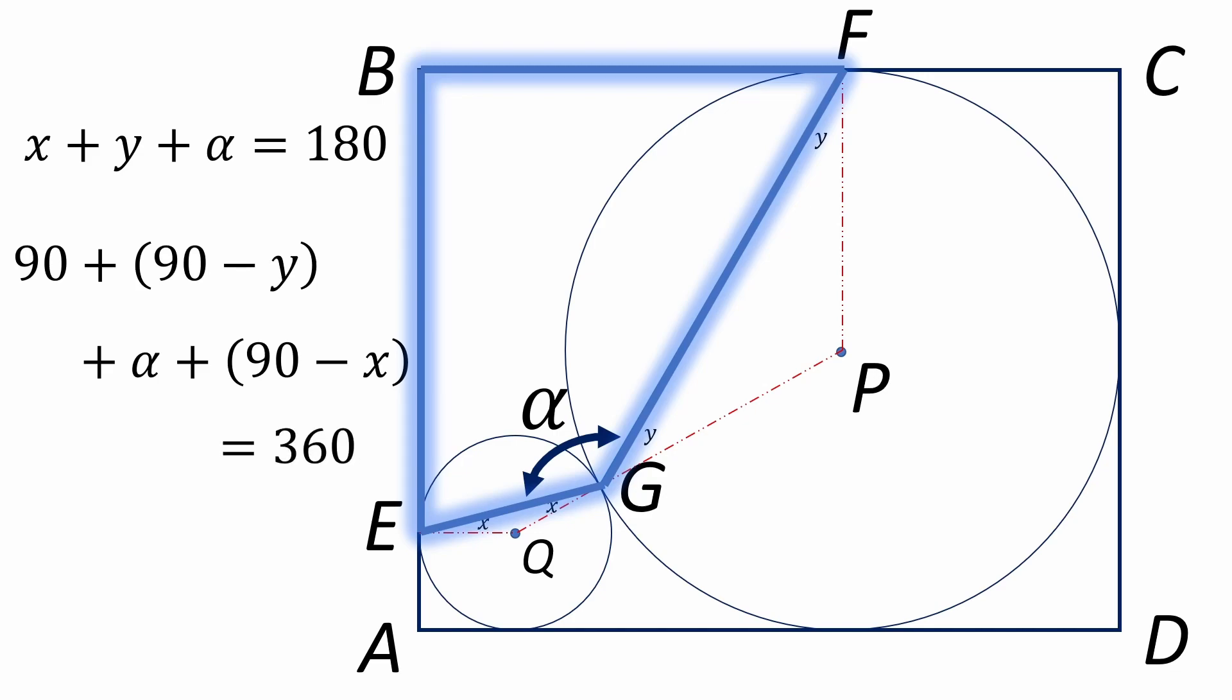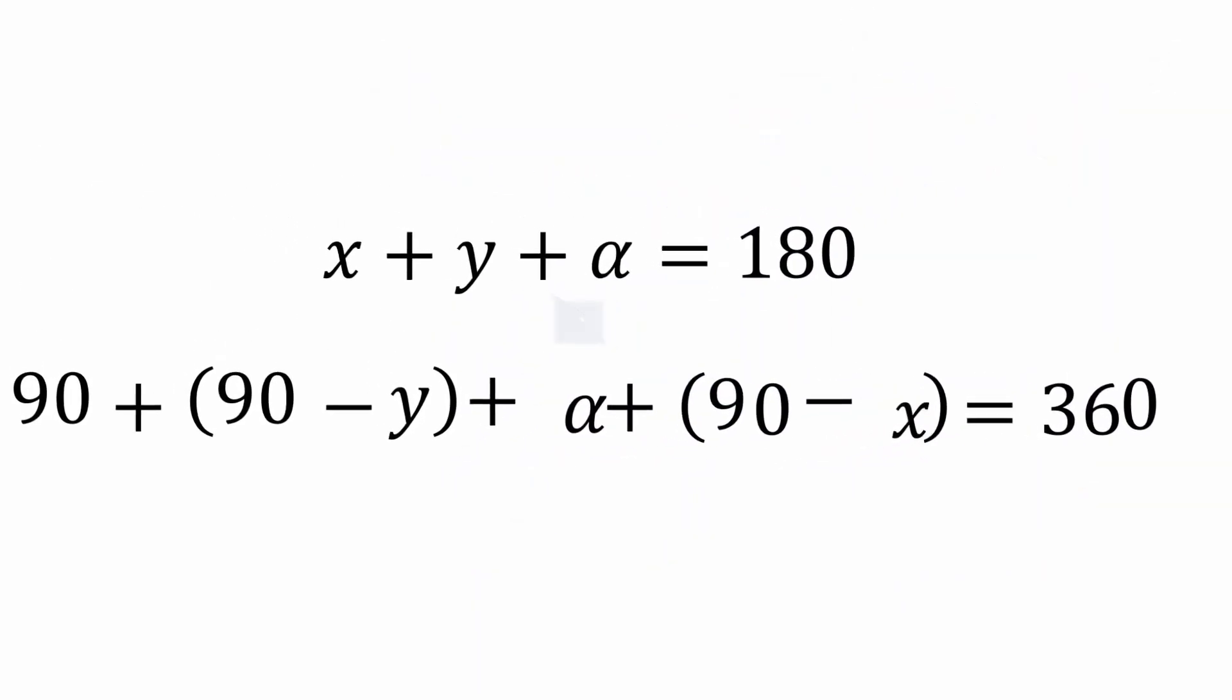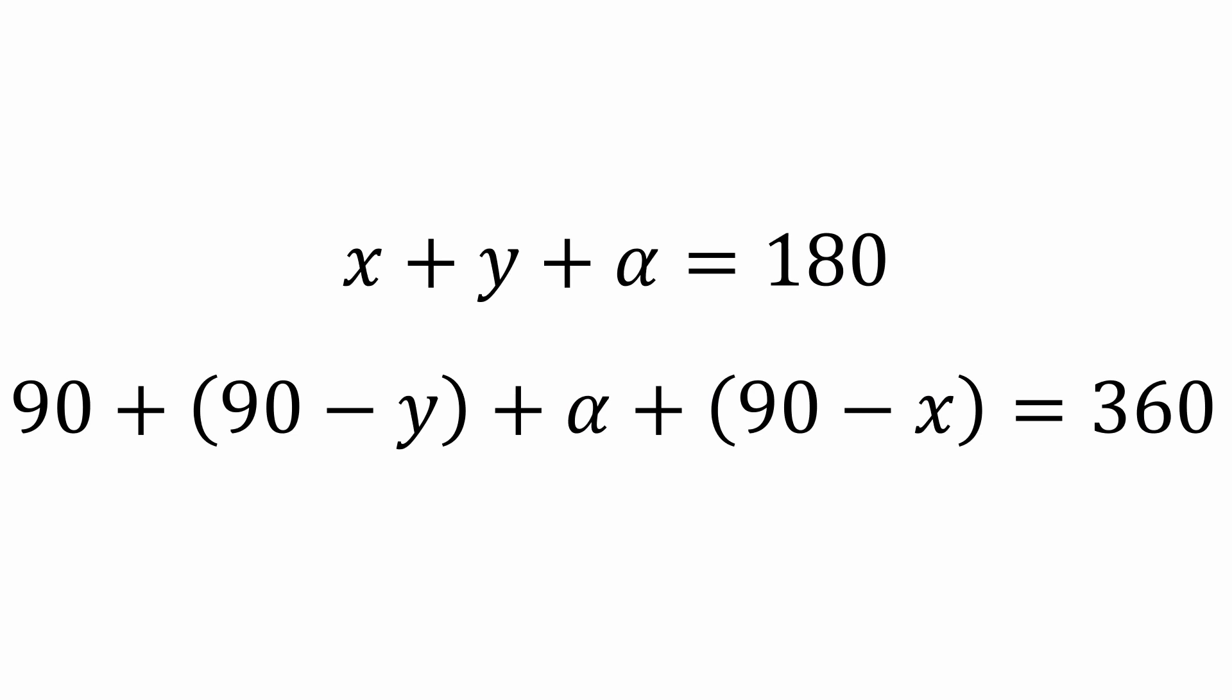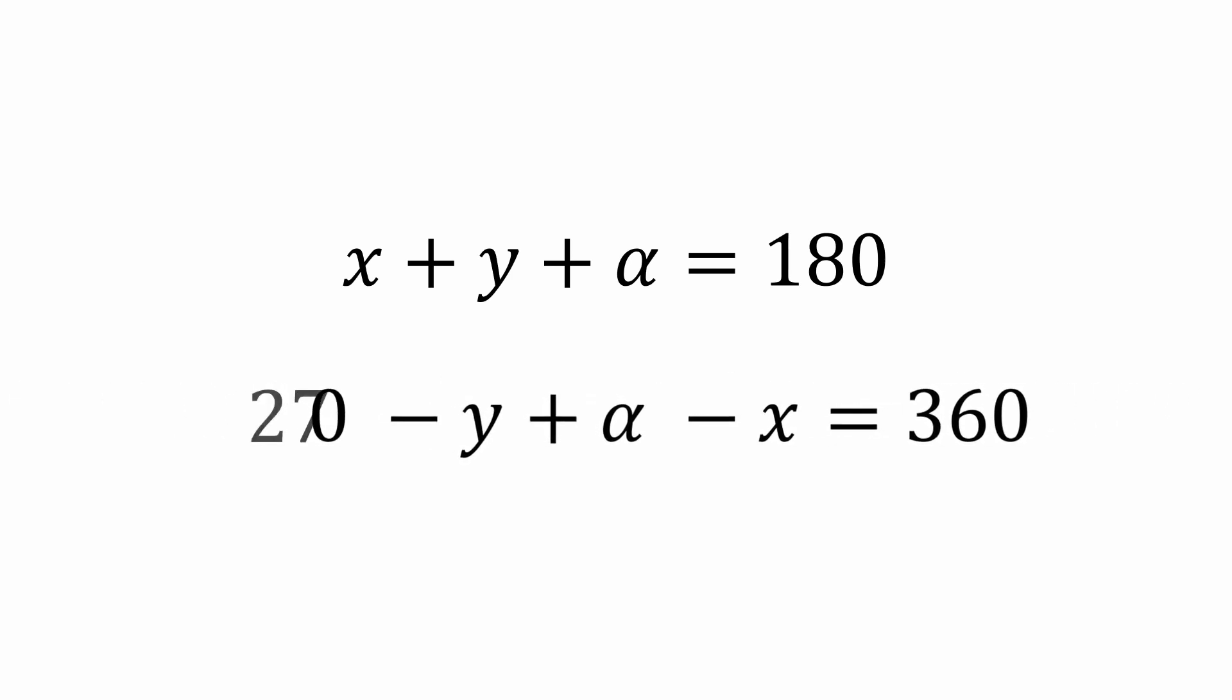The rest is just a little algebra, so let's hone in on these two equations. Let's first remove the parentheses from the second equation and add up the 3 90s to get 270. Then rearrange the variables in the second equation and take 270 away from both sides.